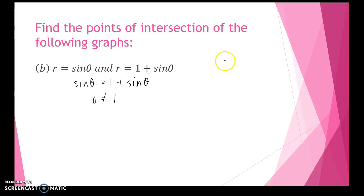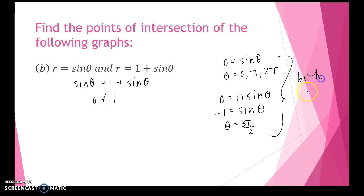So for each function, we need to check if the pole gives us a point of intersection. When I set sine theta equal to 0, I know that occurs at 0, at π, at 2π. So the sine function is equal to 0 for some value of theta. Setting the other function equal to 0, I get negative 1 equals sine theta, and I know that this occurs at 3π over 2. So even though the values of theta are not the same, because both functions intersect the pole, since both exist for r equals 0, a point of intersection of these graphs would be at the pole 0 comma 0.